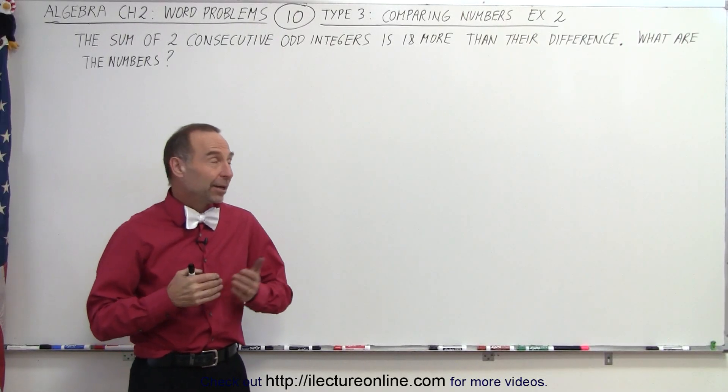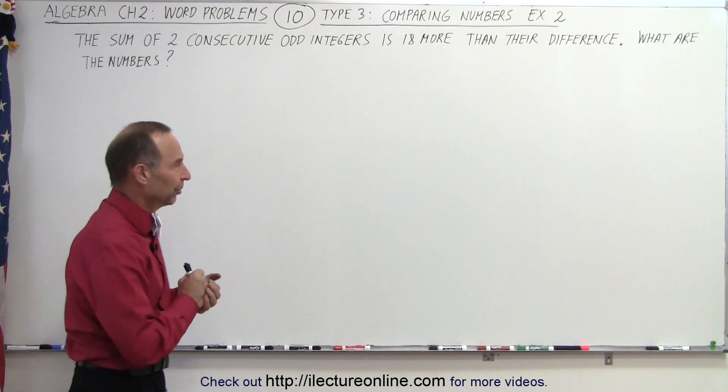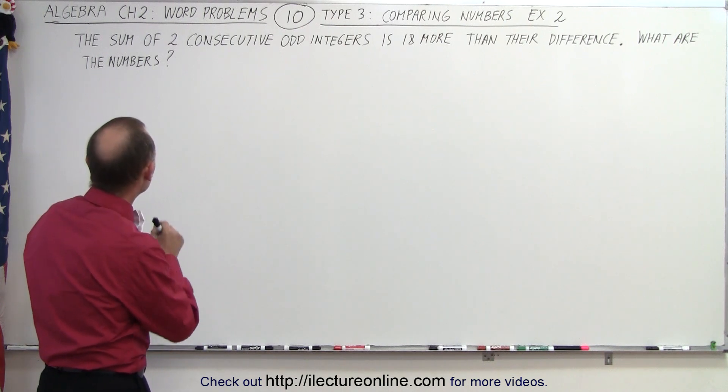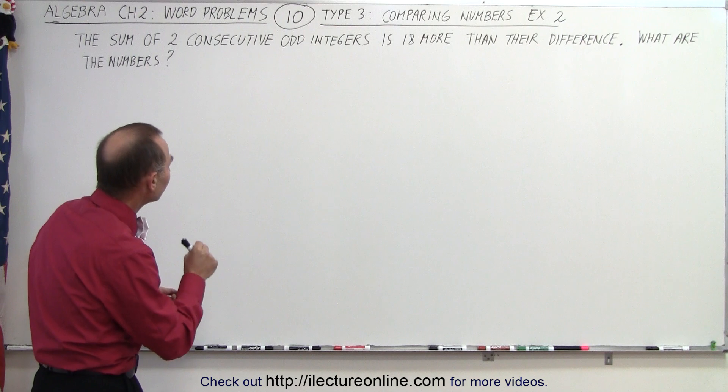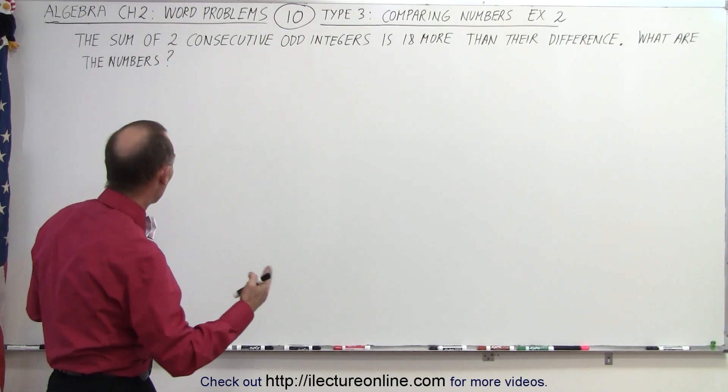Welcome to my lecture online. Now here's our second example of how to work with word problems dealing with numbers. Here we're told that the sum of two consecutive odd integers is 18 more than their difference. What are the numbers?